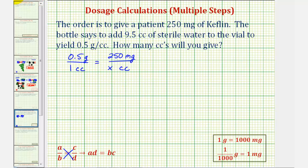Notice how we do have the same units on the bottom - we have cc's here and here. But on top, we have grams and milligrams, which means we'll have to perform a conversion, either grams to milligrams or milligrams to grams.